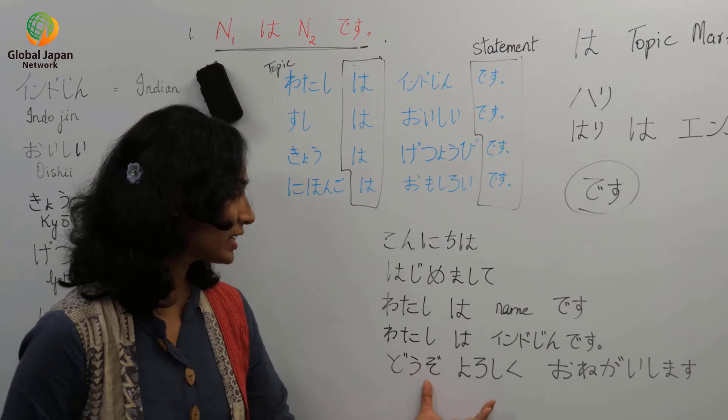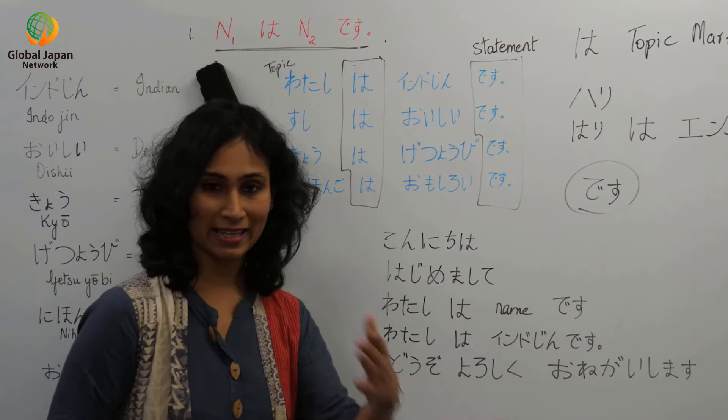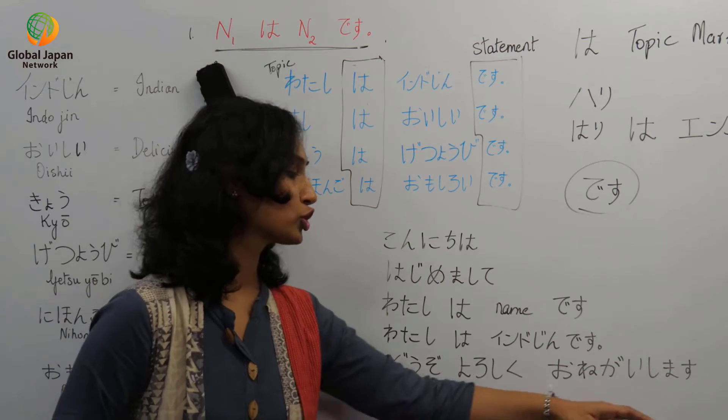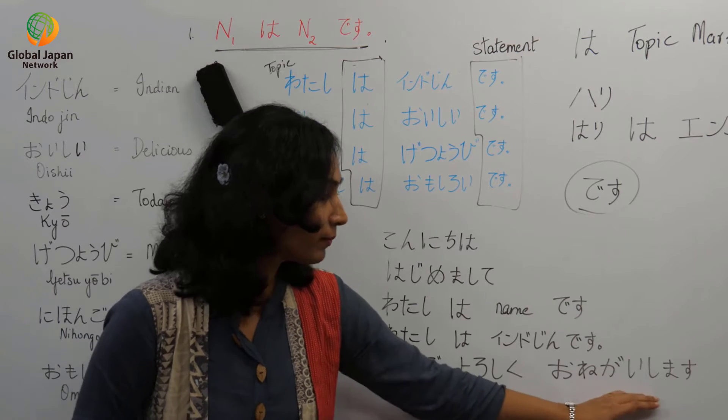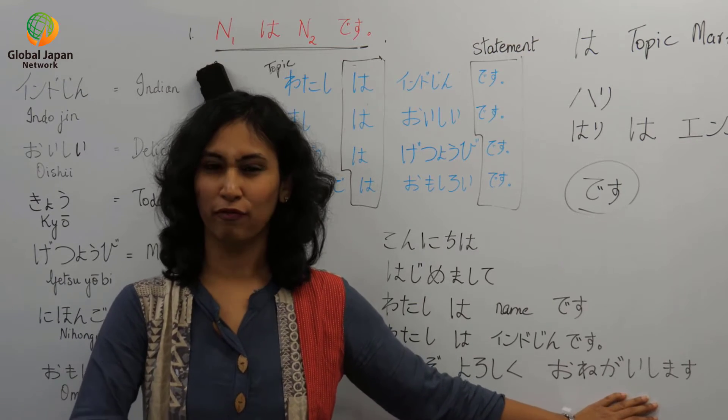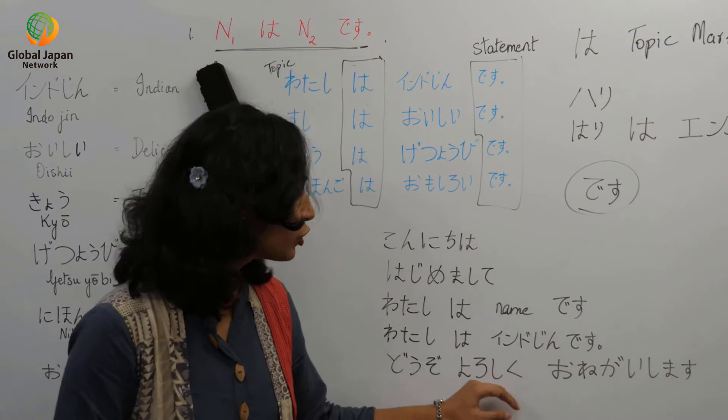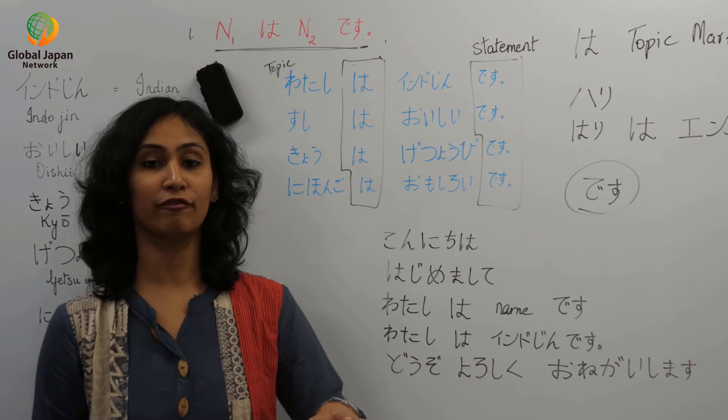So this is a phrase which is commonly used at the end. Dozo yoroshiku onegai shimasu. Onegai shimasu makes it more formal polite form. If you just tell yoroshiku it means it is informal or casual.